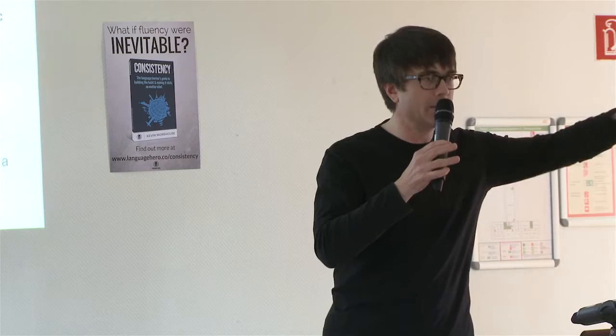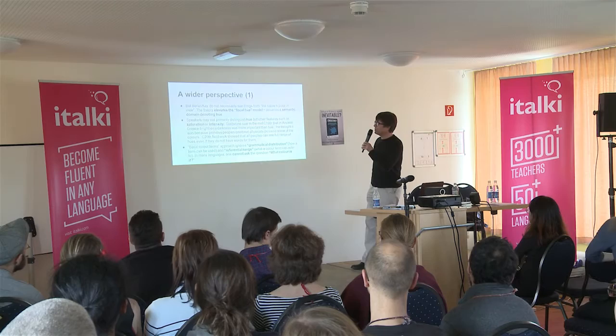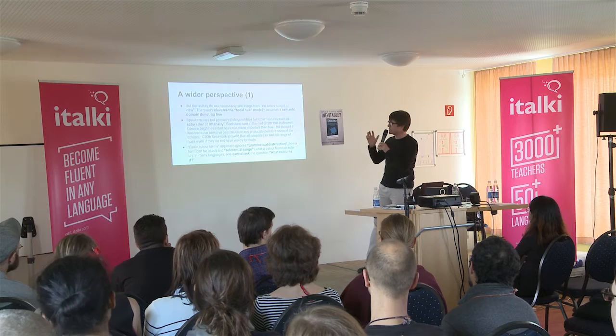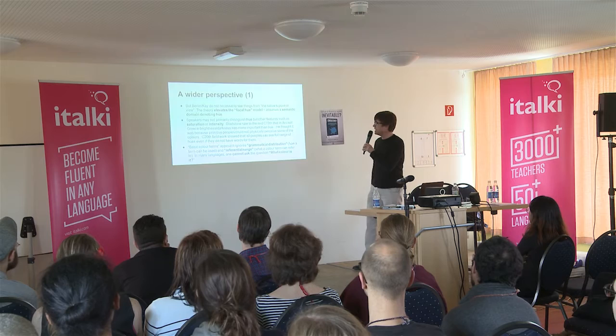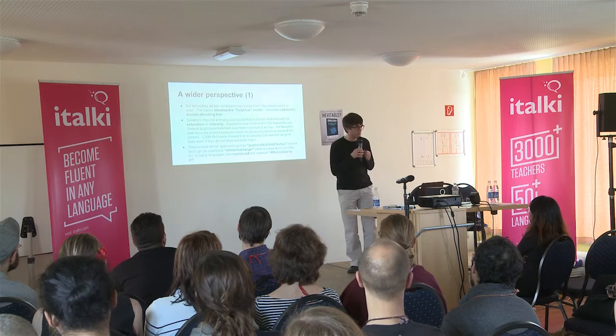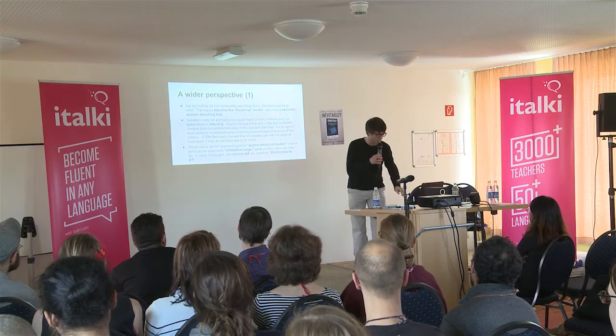The theory assumes there's a semantic domain all about hue — the wavelength along the rainbow. But others have noticed that in some cultures, the place along the rainbow wasn't the most important thing when describing things. In ancient Greece, as noticed in the 19th century, people referred much more to brightness and darkness. The 'wine-dark sea' in Homer — that sort of idea. It was the darkness that was more important. Another criticism is that the basic color terms approach ignores the grammatical distribution of how a term can be used and its referential range.